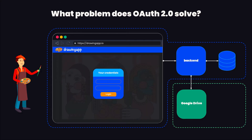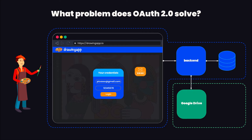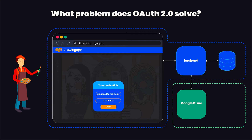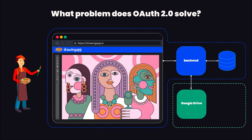Prior to OAuth 2.0, the third-party application — in our case the drawing application — would have asked for your credentials and then used those credentials to access the desired service directly. And if you were really out of luck, it would have even stored your username and plaintext password in the database to avoid asking you for your password all the time. And then OAuth came along and fixed this mess.